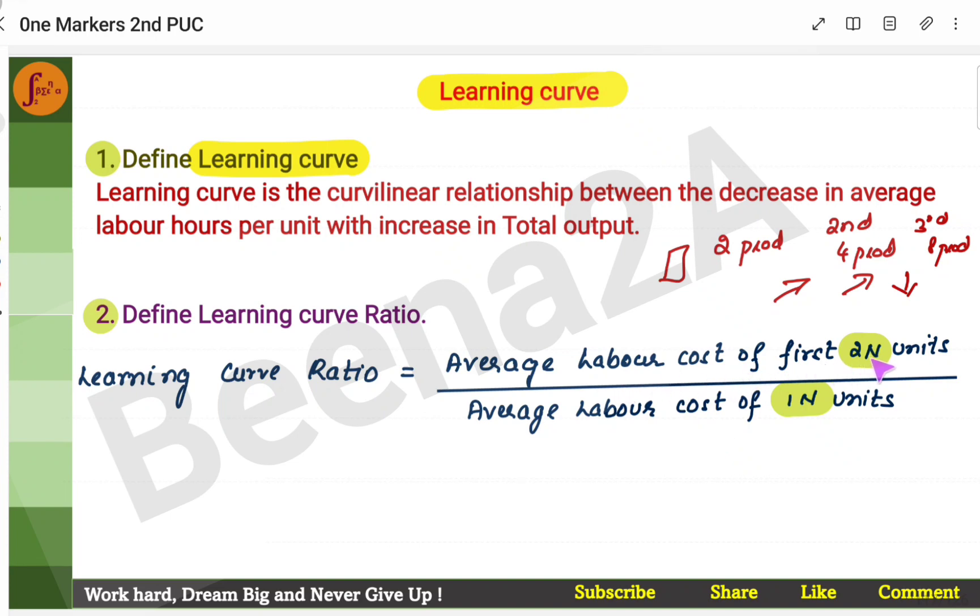Average labor cost of first 2N units. That means, say, I am first making 100 units in one day. And then second day, say, I am making 200 units. Now, so you will have to take the labor cost, the labor cost you incur, the cost that you incur in making 100 units and labor cost in making 200 units.